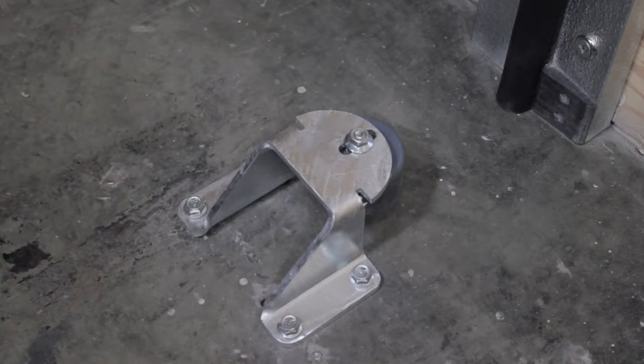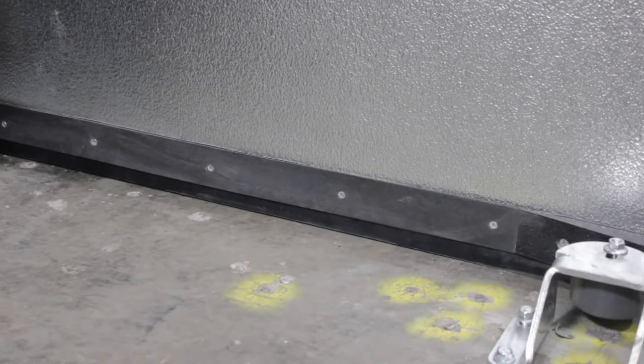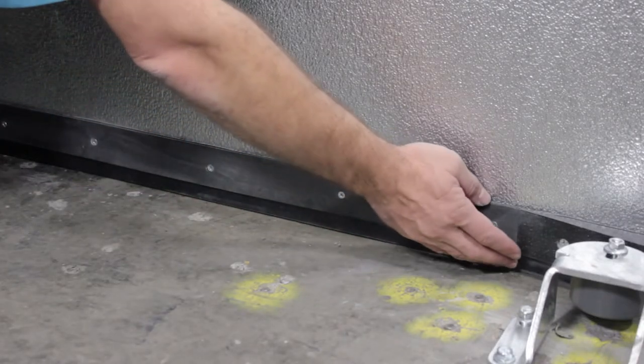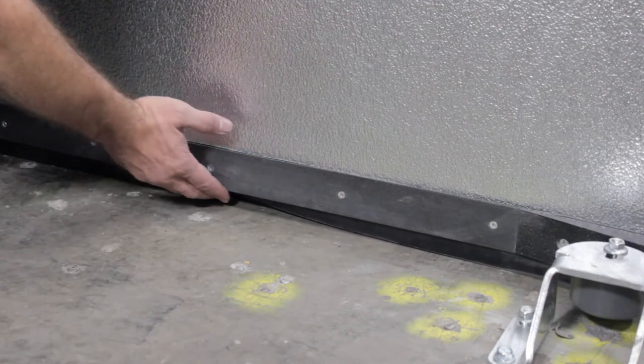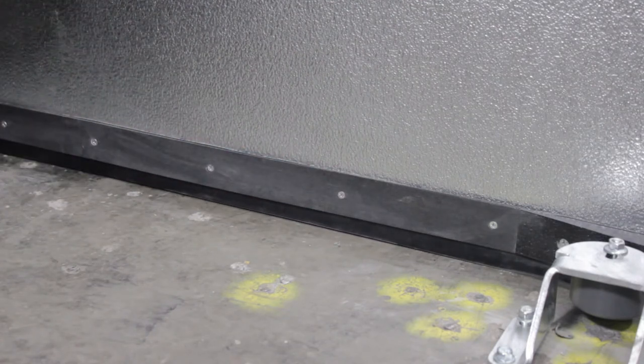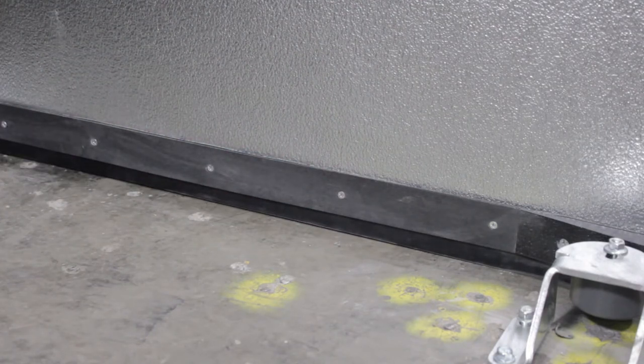While still at the bottom of the door, inspect the bottom neoprene sweep gasket for proper light-tight seal. Adjust or replace as needed. Our video, How to Adjust Sliding Door Height, covers this process.